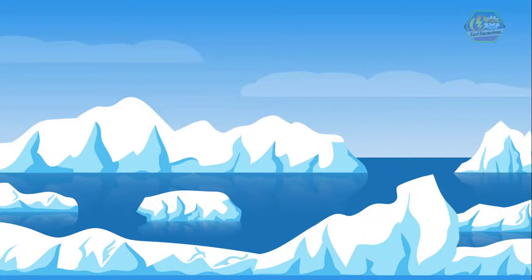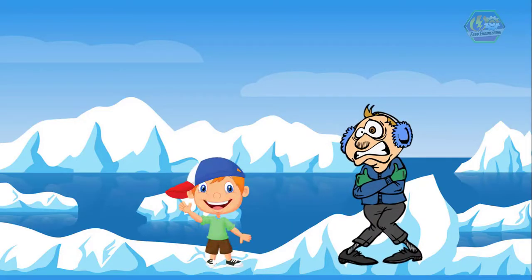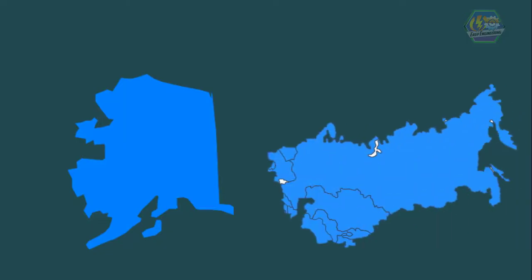So what is Tundra? A Tundra is another type of ecosystem that is very cold and dry, and mostly found in the northern part of the world like in Alaska and Upper Russia.